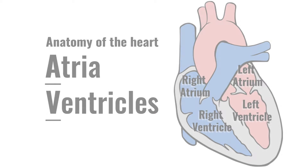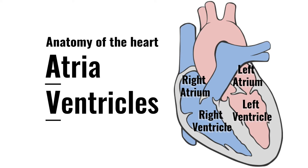Welcome to this video tutorial on heart mnemonics. First, we're going to take a look at the anatomy of the heart. Each half of the heart has an upper collecting chamber, the atrium, and a lower pumping chamber, the ventricle. You can remember their location because A comes before V — the atrium is above the ventricle.